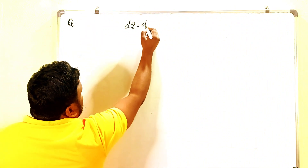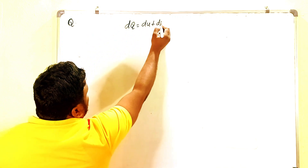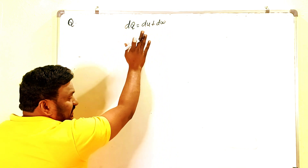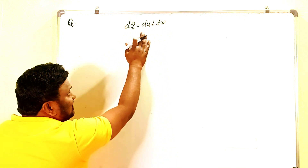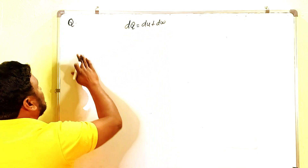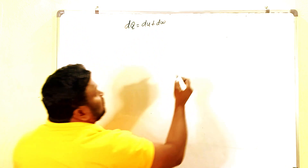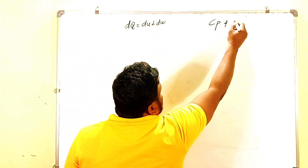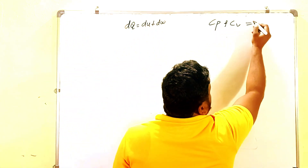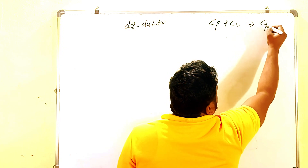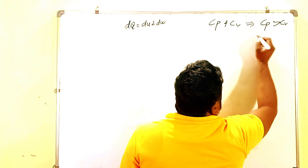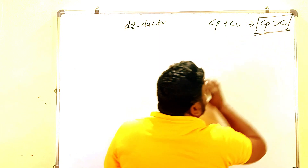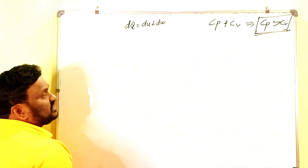The first law of thermodynamics states: dQ = dU + dW, where dQ is the amount of heat supplied, dU is the change in internal energy, and dW is the amount of work done. Among Cp and Cv, Cp is greater than Cv — molar specific heat at constant pressure is greater than at constant volume. Here is why.